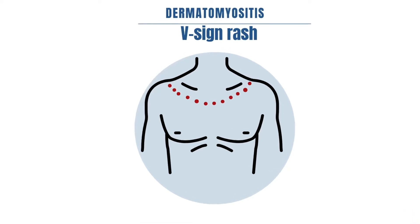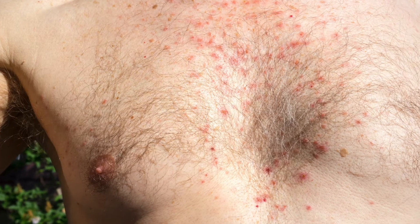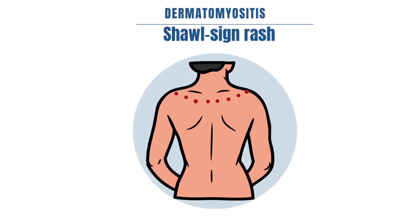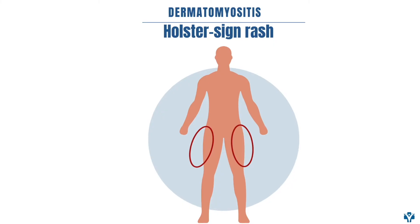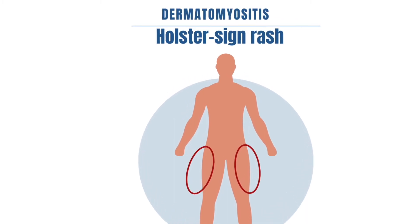V-sign rash: This type of rash is located on the anterior chest and can look like a V-sign. Shawl sign rash: This is a rash over the shoulders and the upper part of the arms that sits there like a shawl. Holster sign: This is a rash on the lateral aspects of the proximal thighs.